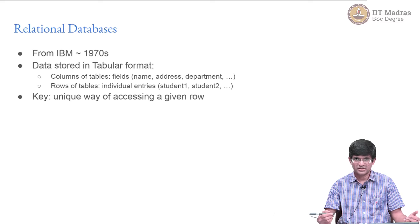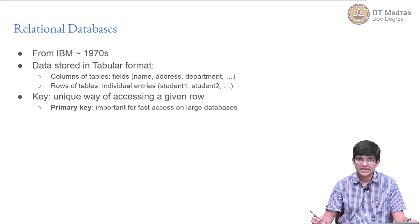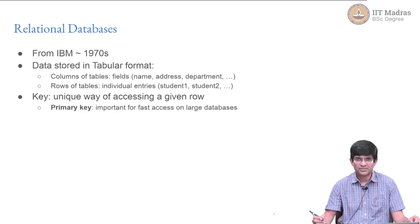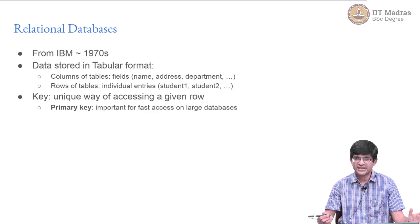One important concept from the point of view of database implementation is the key — a unique way of accessing a given row. Primary keys are important for fast access on large databases. Having a primary key that is an integer makes it easy to directly hook into a database entry and pull out the row corresponding to one particular value, rather than searching through rows to do a string match against a name. With an integer primary key there are much faster ways to access the correct row.